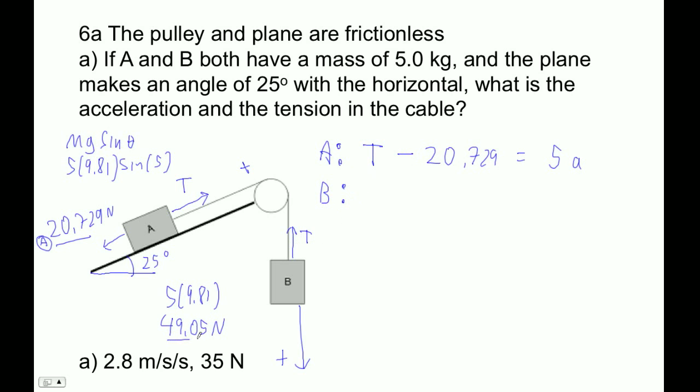So for this guy, we've got the weight, the 49.05. That's causing the acceleration. Protagonist minus antagonist. Equals 5A.